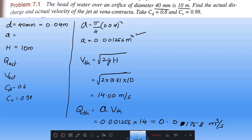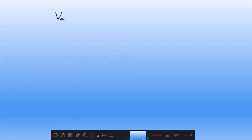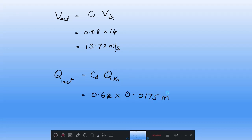V theoretical is got and Q theoretical we got, but they are asking actual. Remember, V actual equals Cv into V theoretical. Cv is 0.98 into V theoretical is 14, which gives 13.72 meter per second. Then Q actual will equal Cd into Q theoretical. Therefore Cd is how much?